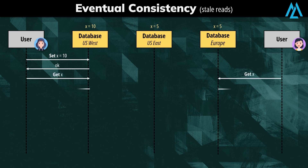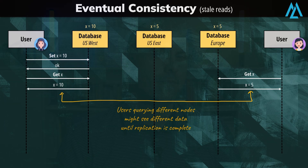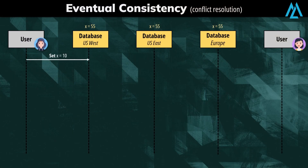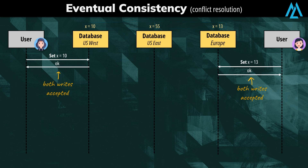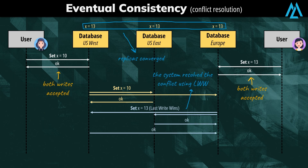Obviously, this comes with a trade-off, which is the possibility of stale reads — we're not guaranteed to always see the latest data. The weaker guarantees offered by eventual consistency allow us to achieve better scalability. In fact, we can accept concurrent updates while automatically resolving conflicts under the hood. A common approach is to use the last-write-wins strategy, where if two users updated concurrently the same data in different nodes, we would silently replicate only the most recent one.